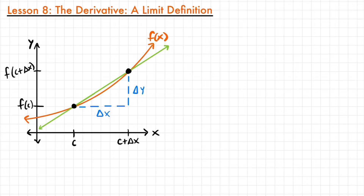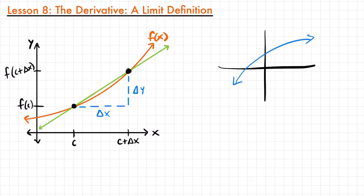This slope belongs to the tangent line at that point. What a tangent line is — if I had a function that looked like this, a tangent line would be a line that hits a point on this function but barely touches that point and takes its slope. That is the whole line; it doesn't have any curves. It's just a line that goes on forever that has the slope of a particular point on a function.